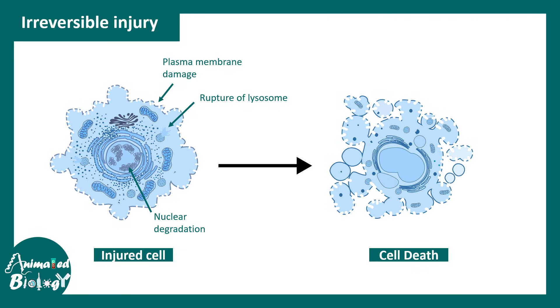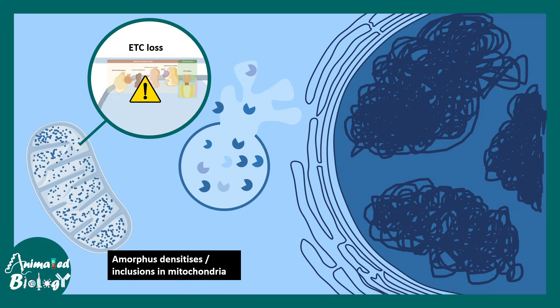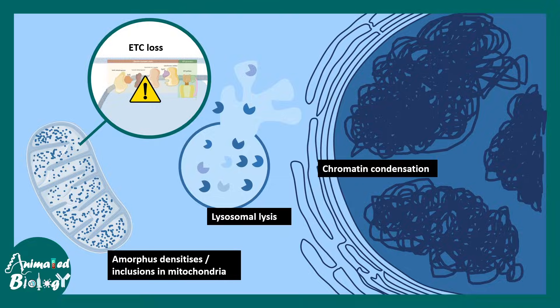There could be damage to the plasma membrane or compromisation of mitochondrial permeability. The key hallmarks of irreversible injury are loss or dysfunction of the electron transport chain, amorphous densities or inclusion bodies found in mitochondria, chromatin condensation, and burst of the lysosome known as autolysis.